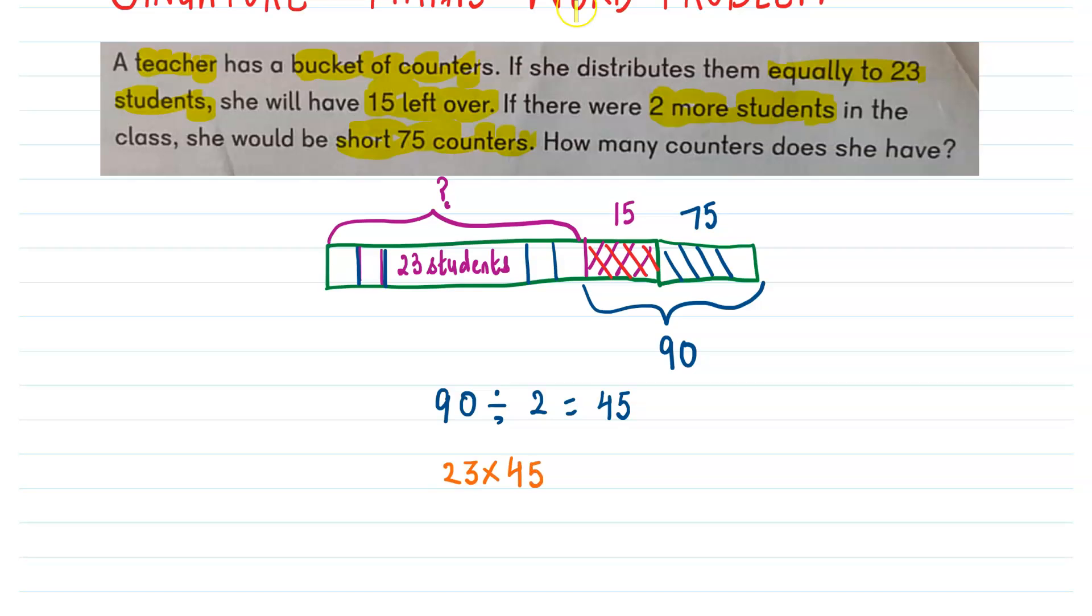So actually, in the beginning, she had these many counters. Each student got 45. So we multiply 23 by 45 and we add 15. This comes out to be 1050.